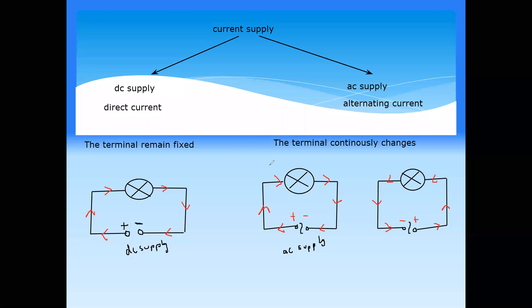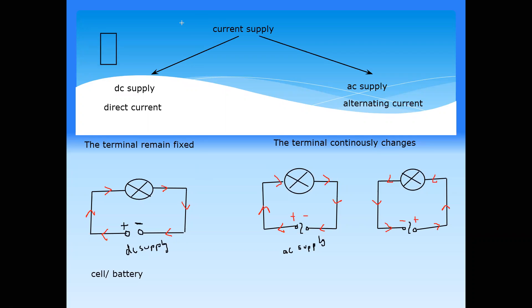The difference between AC and DC: normally a battery or cell is a DC supply. When you buy a cell, it is written on it which terminal is positive and which is negative. The terminals remain constant, so a cell or battery is a DC supply.